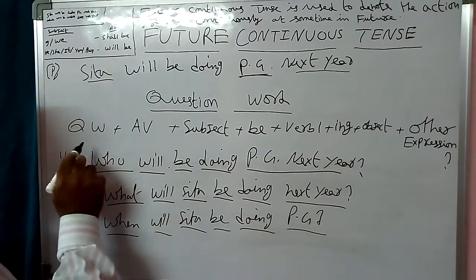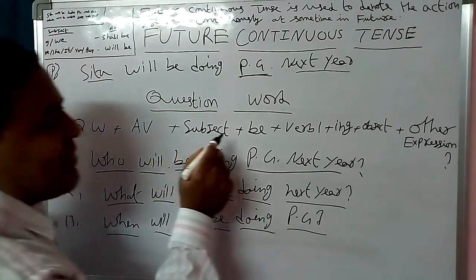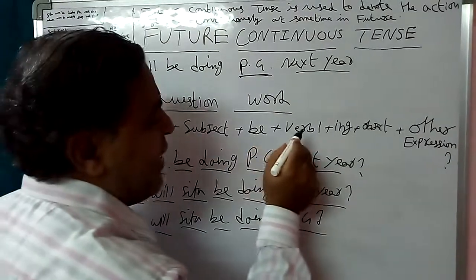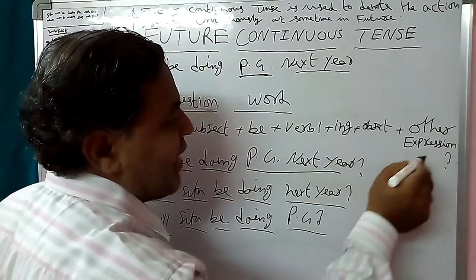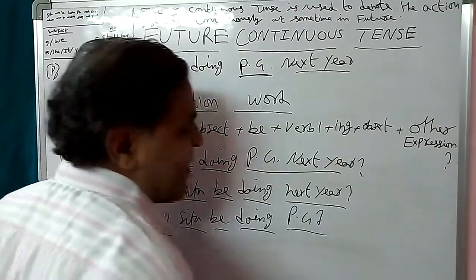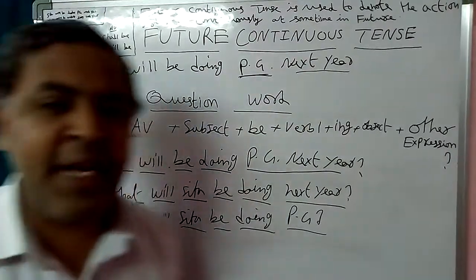Here the question word rule is: Question Word + Auxiliary + Subject + Be + Verb 1 + -ing + Object + Other Expression + Question Mark. Thank you.